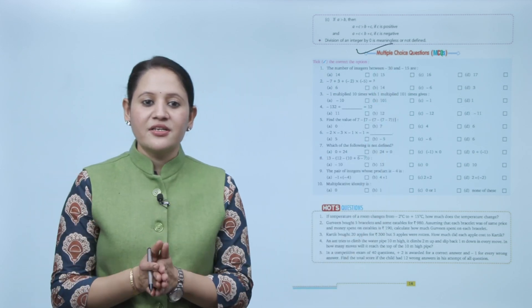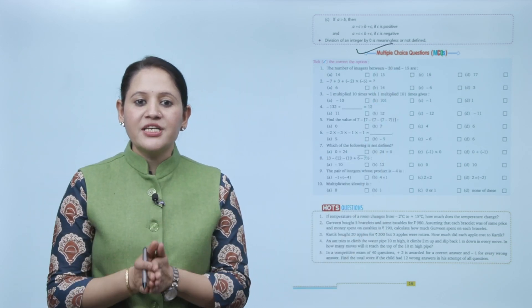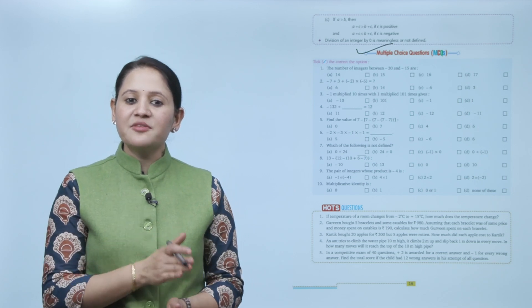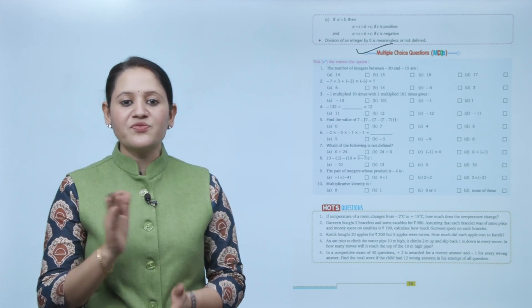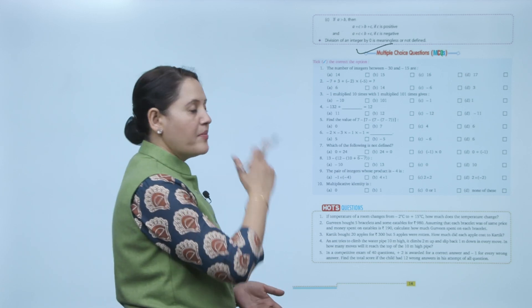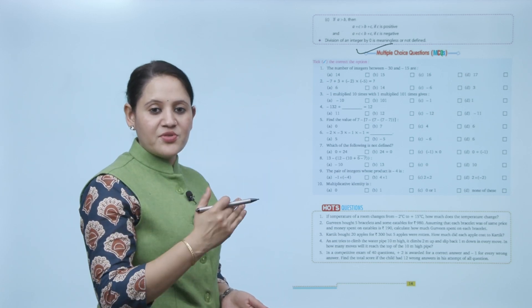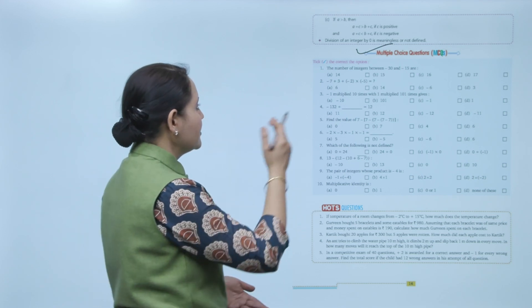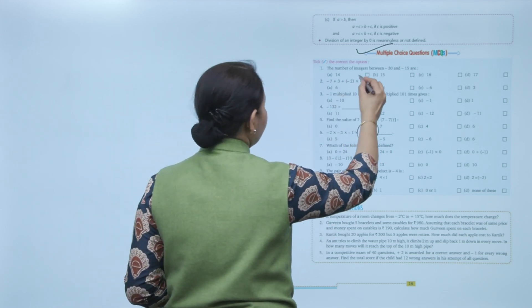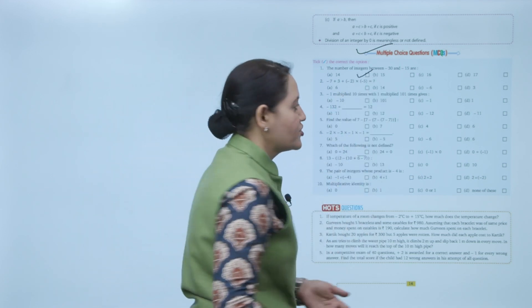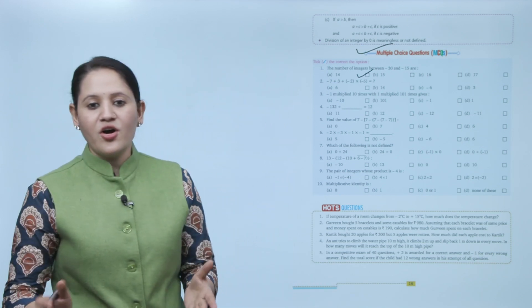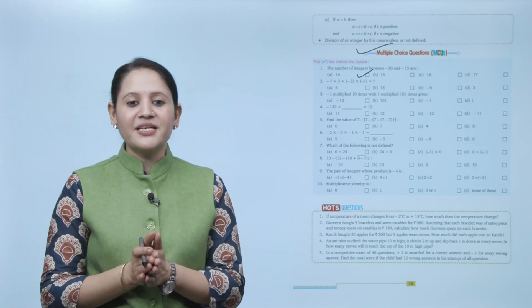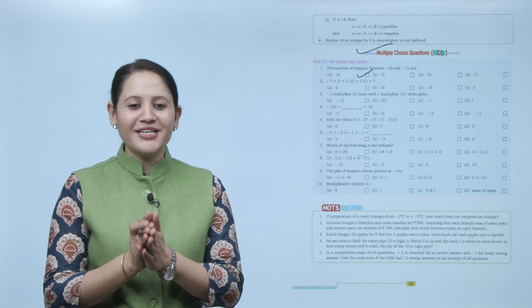Next, multiple choice question. Find the number of integers between minus 30 and minus 15. Starting from minus 29, minus 28, minus 27 and so on up to minus 16 — the total number of integers is 14, so option A is correct. You have to practice all the questions of this chapter. Here we end the chapter; I hope you understood it well.